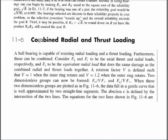Now we're going to do something else that's harmful to ball bearings. We've already looked at radial loading — that's the only load we've seen so far. Now we're going to add thrust loading to that same bearing, and that thrust loading is going to cause it to get damaged earlier. A ball bearing is capable of resisting both radial loading and thrust loading — they can be combined.